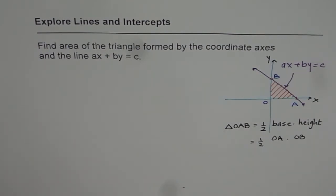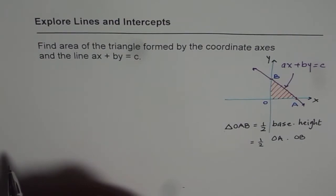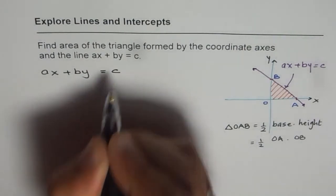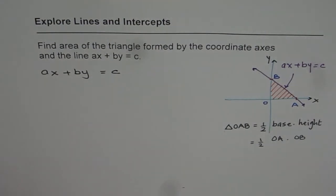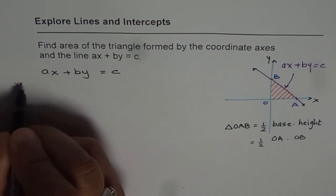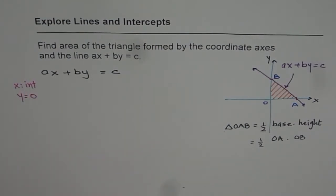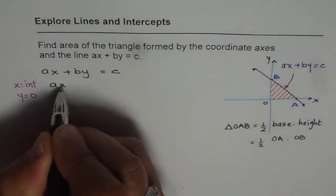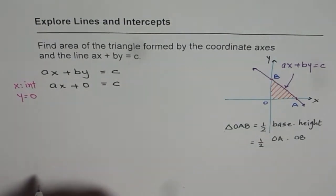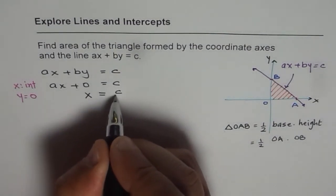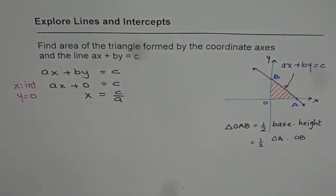That is the concept. Let's find a general equation for this area using the general equation of the line ax plus by equals to c. To find the x-intercept, we set y equals to 0. Substituting y equals to 0 gives ax equals to c, and therefore the x-intercept is x equals to c over a.